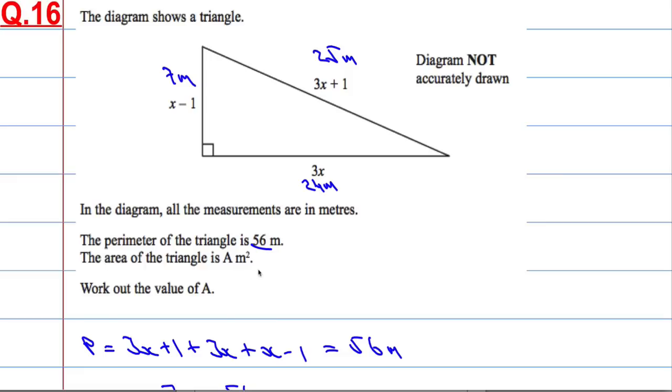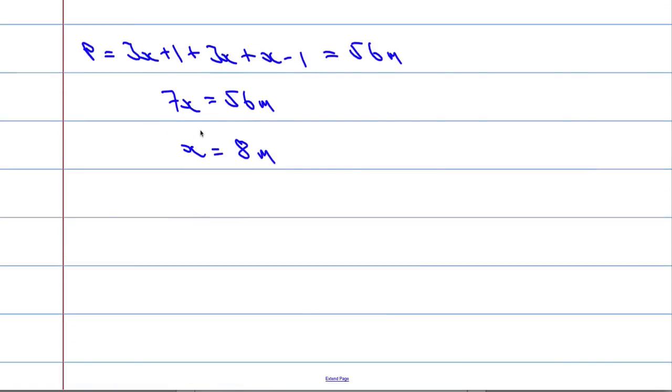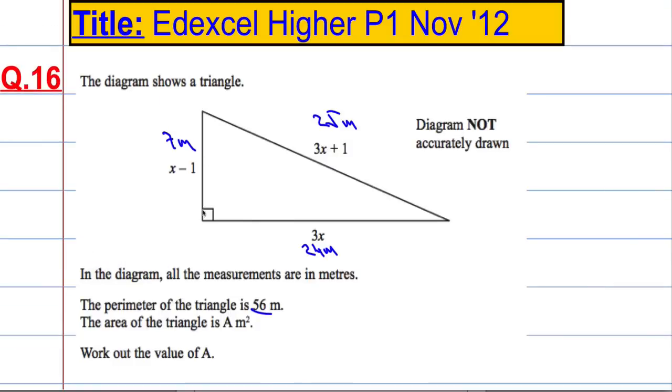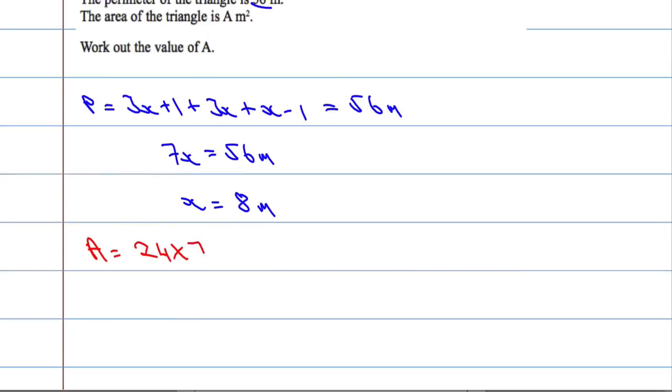I want the area of the triangle. Well, the area of the triangle is half the base times the perpendicular height. Or, you might be more familiar with doing the base times the height, and then halving your answer. So, the area will equal the base, which is 24, multiplied by the height, the perpendicular height, which is 7. And then we need to halve our answer.